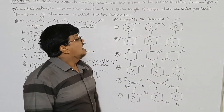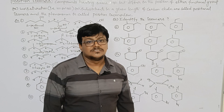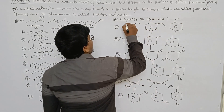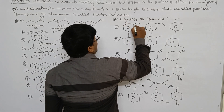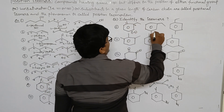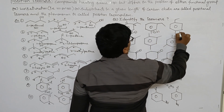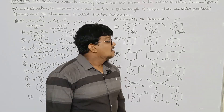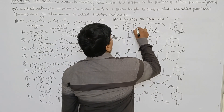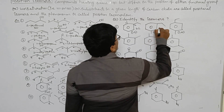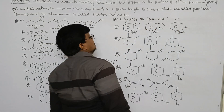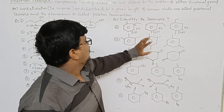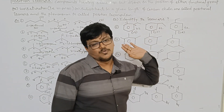Now for the questions — identify the isomers. For the first compound, benzene with substituents at the 1,2 position; the second compound at the 1,3 position; and the third compound at the 1,4 position. These three are positional isomers because all three have the same root word and the same isomeric number — 62 — with the methyl groups at different positions on the benzene ring.